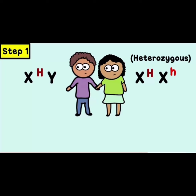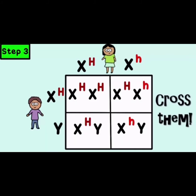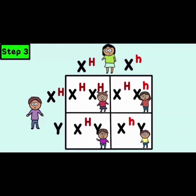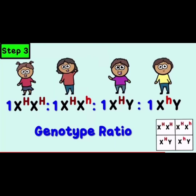As we can see in the picture, the father is X superscript H and Y, while the mother is X superscript H and X superscript H. To determine their offspring, we use a Punnett square. By crossing the genes of their parents, we can identify their offspring and whether they are unaffected, a carrier, or affected. The genotype ratio of their offspring is 1 to 1 to 1 to 1.